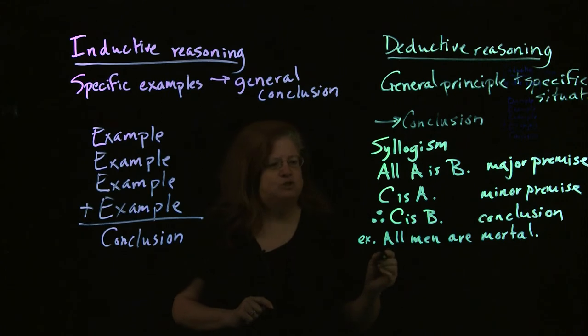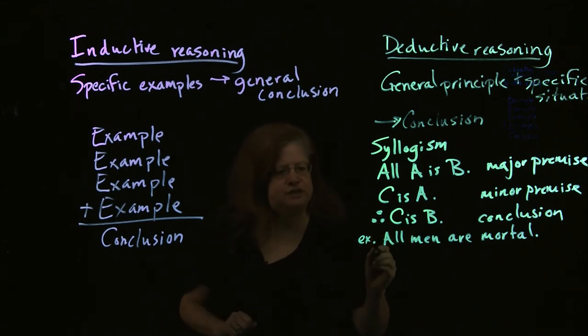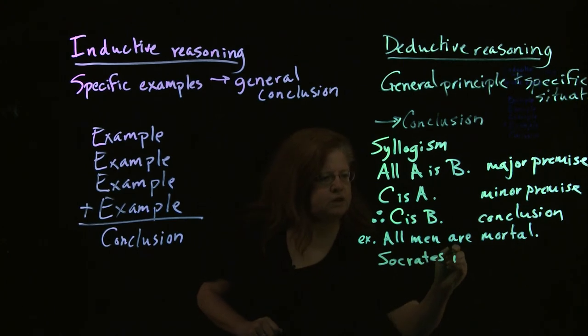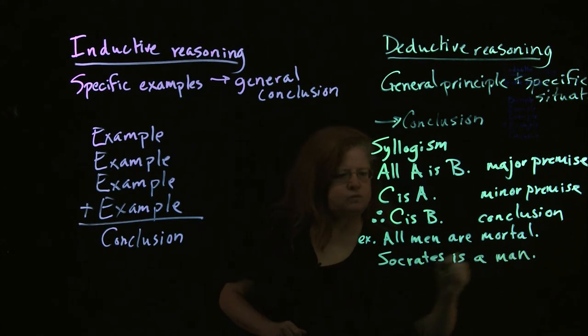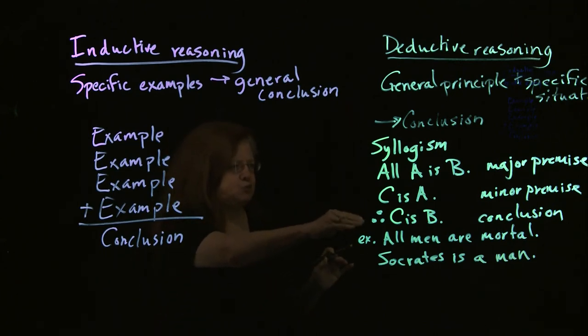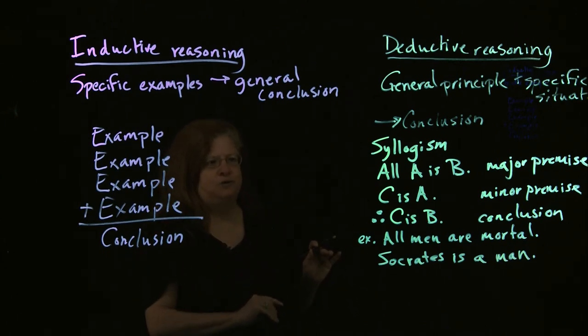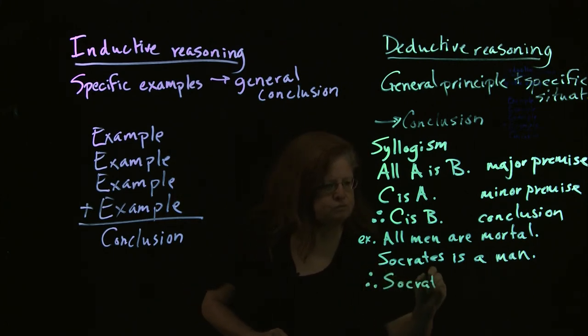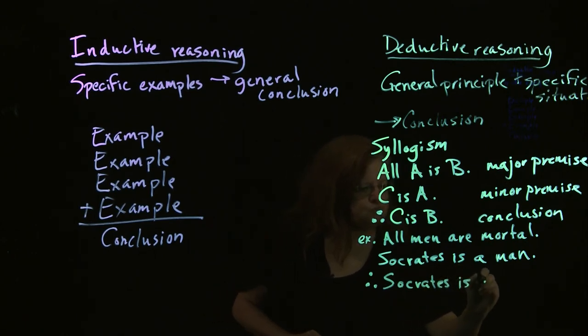So now we want our minor premise. Our minor premise is going to be the specific example. Socrates is a man. So that's our minor premise. Now, if we add the major premise and the minor premise together, we get therefore, Socrates is mortal.